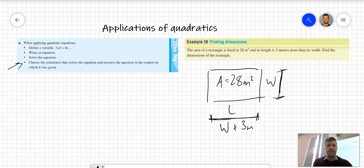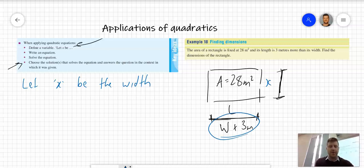We have to define the variable. Let x be the width of the rectangle. So instead of having w here, I'm going to have x. Instead of having w plus 3, I can have x plus 3.